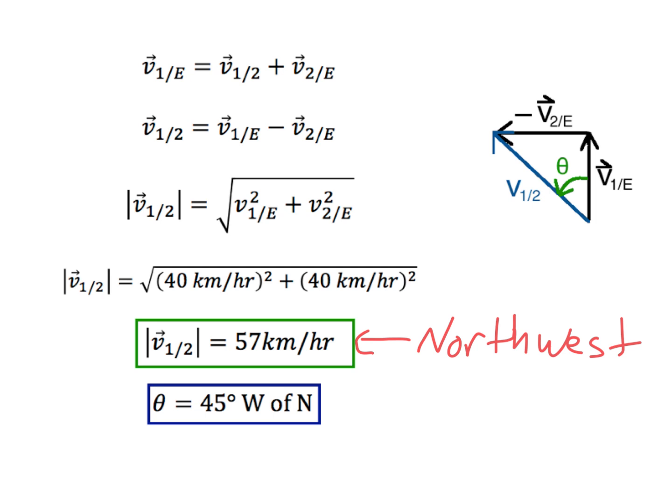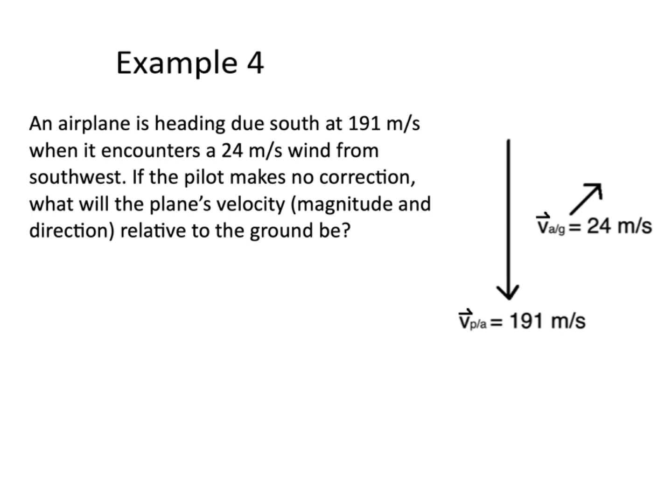So far, all the examples involve either straight-line motion or relative motion at a right angle. What if things are moving at some other angle? It turns out it's slightly harder mathematically but not by a lot, and the procedure is exactly the same: set up the triangle and use the geometry, trigonometry, and algebra you know to solve for the unknowns in that triangle.